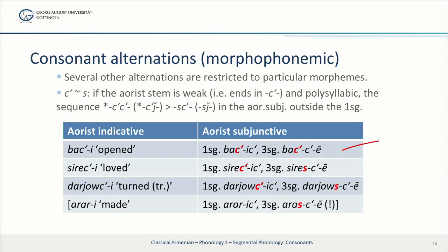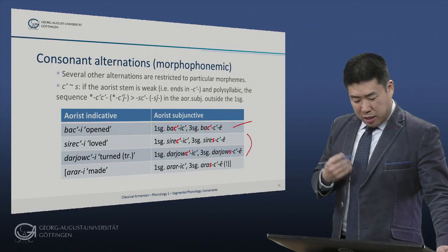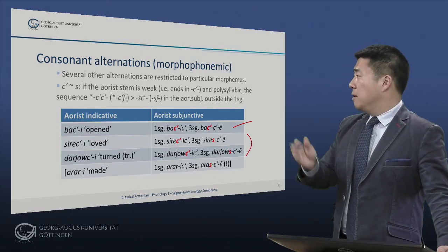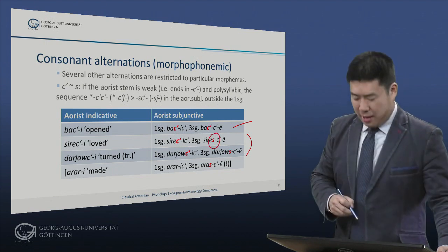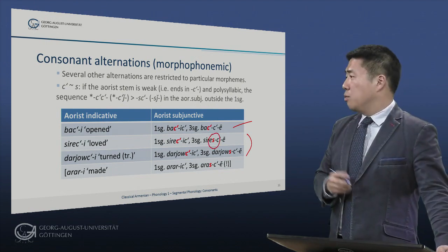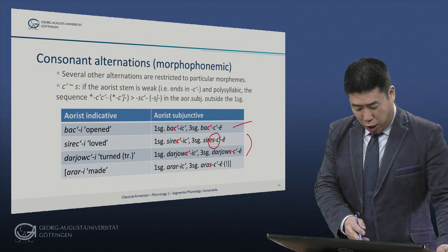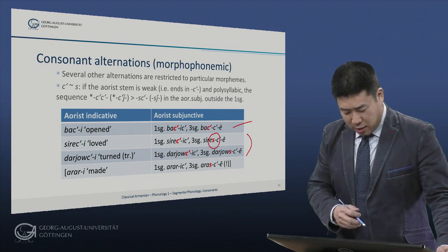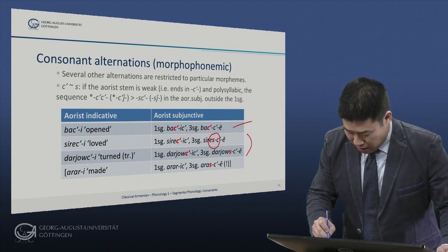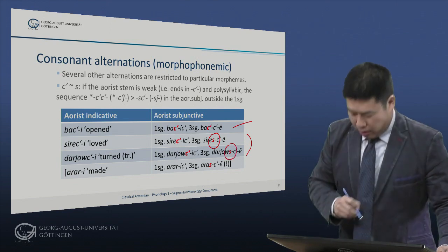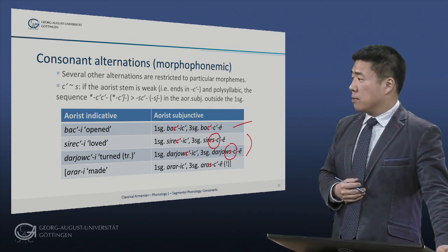In these other forms, however, you see that there is this dissimilation: 'sire-tsi' meaning 'I will love', but third singular 'sire-tsi' meaning 'he or she will love'. Similarly, 'dar-du-tsi' meaning 'I will turn', but 'dar-du-tsi' meaning 'he or she will turn'.